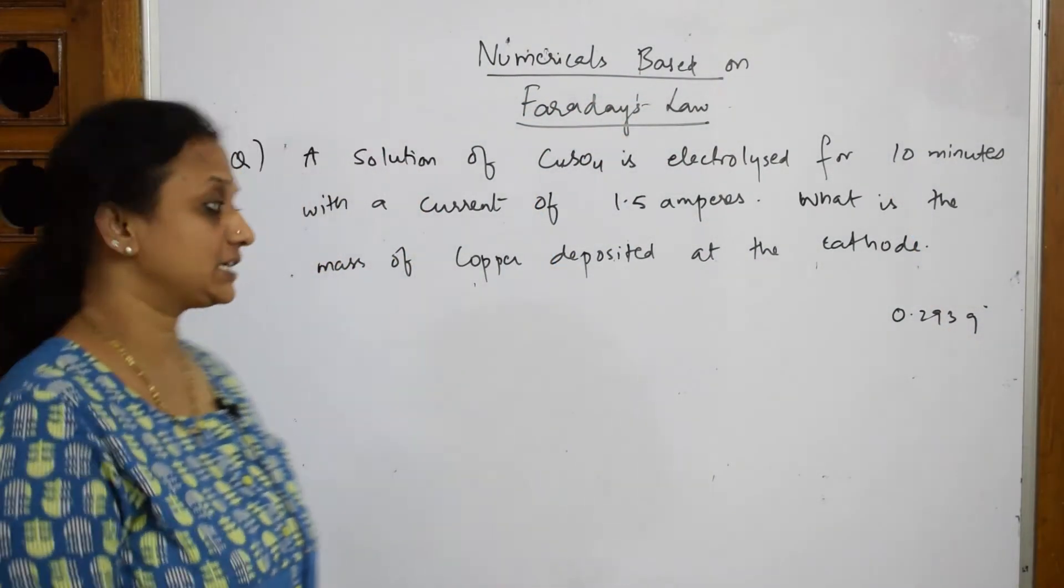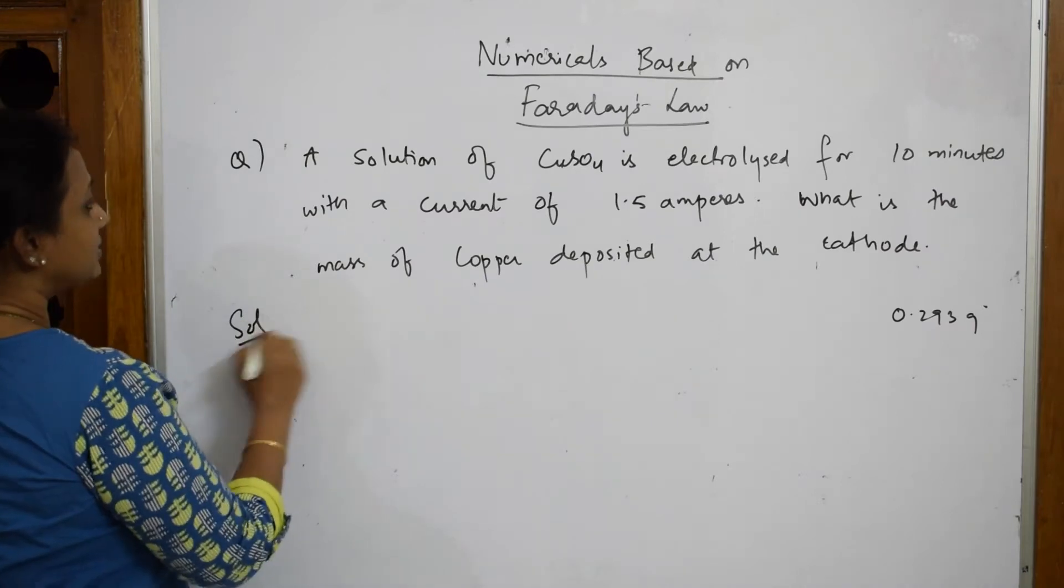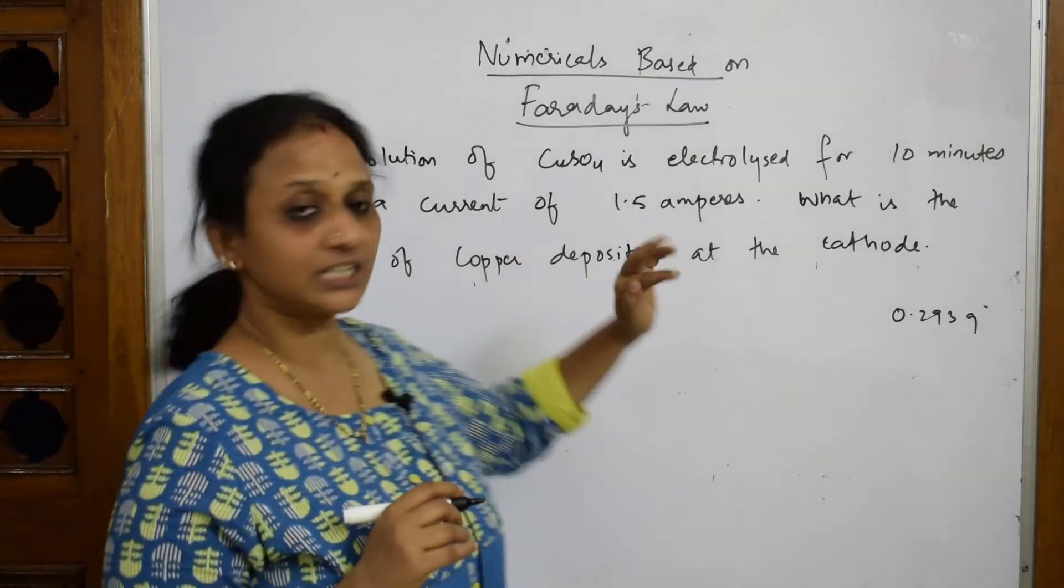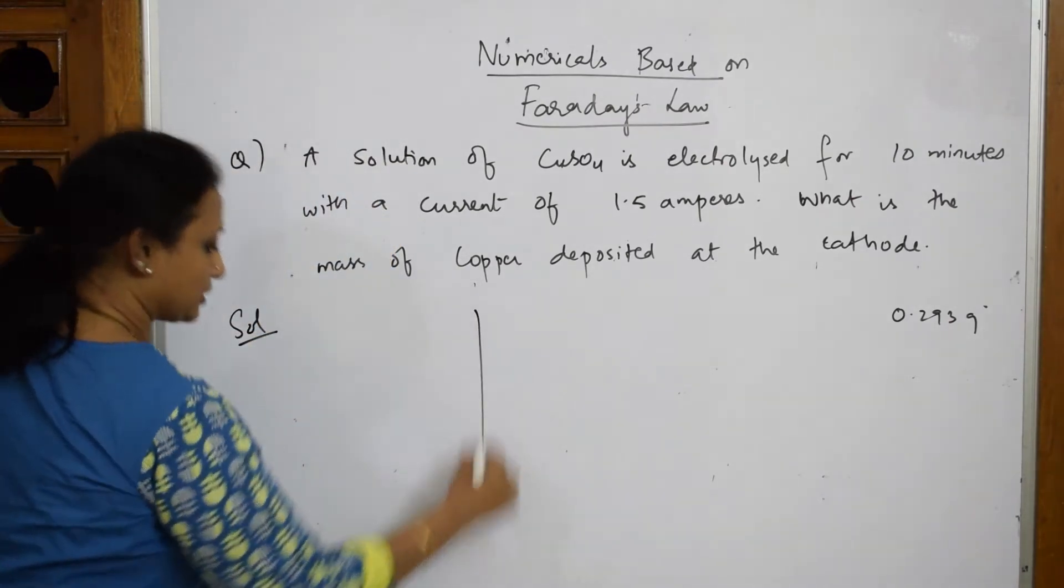Let's come back and see one more numerical in Faraday's law. Let's see. What do they give us? They've given me a solution of copper sulfate is electrolyzed for 10 minutes. They've given me the time. Let us write that first.